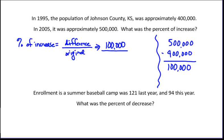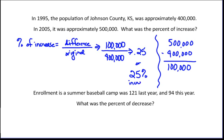The original happened in 1995, and that population was 400,000. Now we just need to divide this out, and we will discover that the result is 0.25, or 25%. So there was a 25% increase in population.